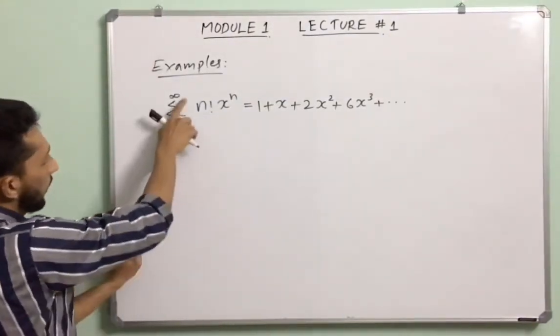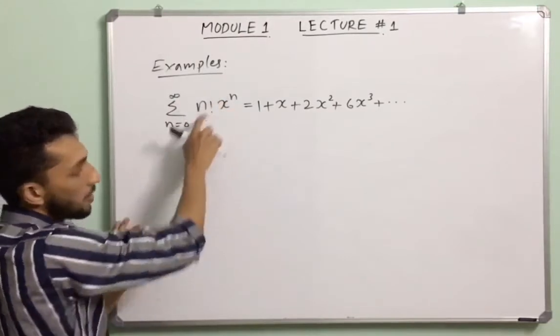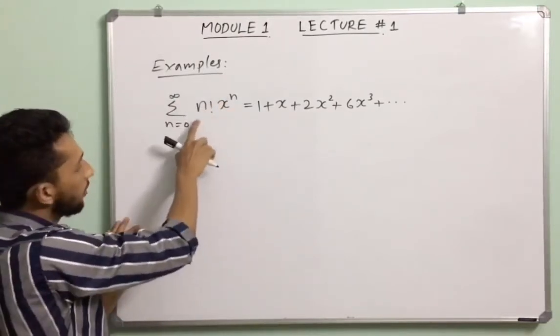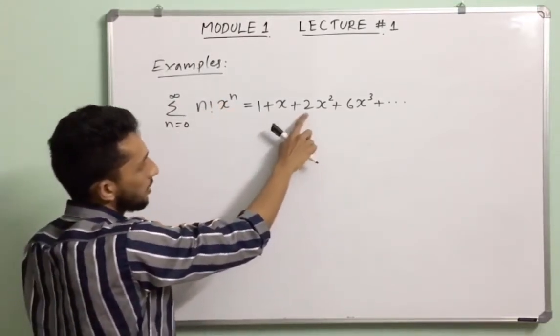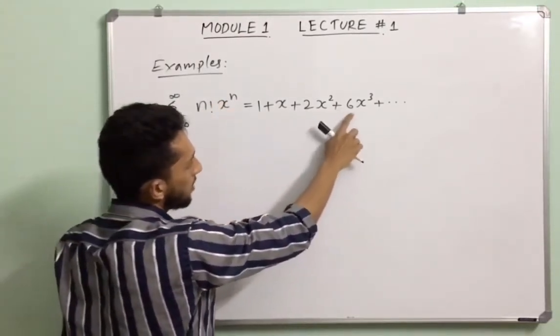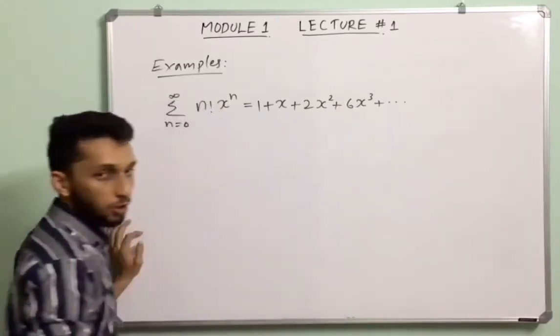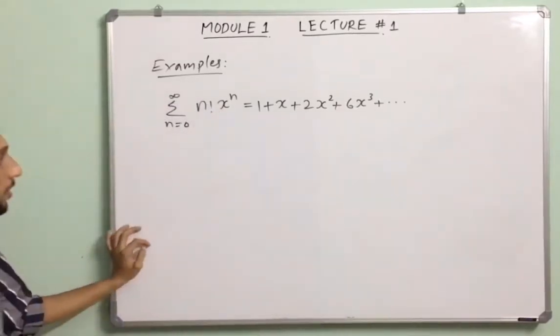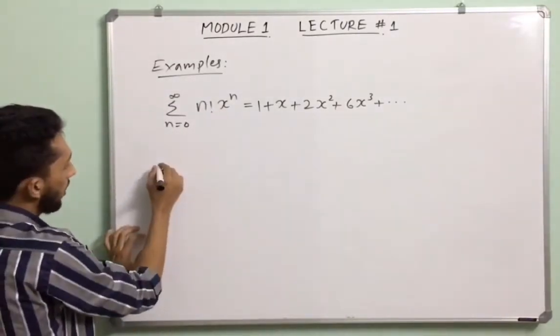Example: summation n from 0 to infinity of n! xⁿ, which expands as 1 plus x plus 2x² plus 6x³ plus etc. We find the radius of convergence R.